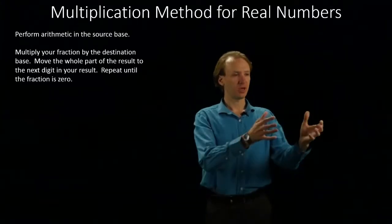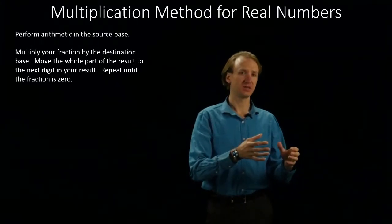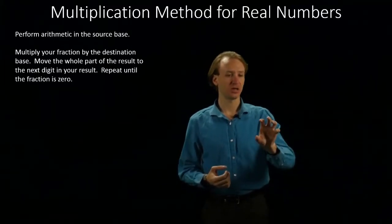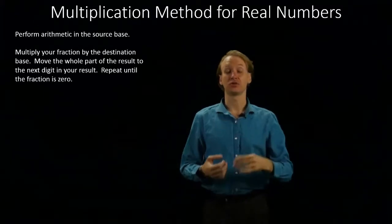Every time you multiply your fraction by your destination base, you're going to get some number ahead of your decimal point. And it's this number that you'll take and use as the next digit in your result.